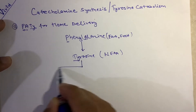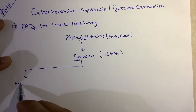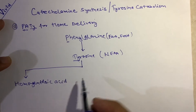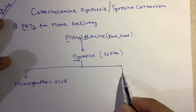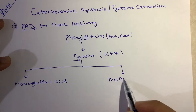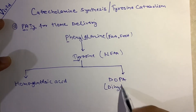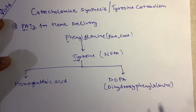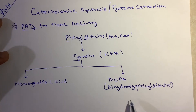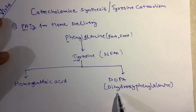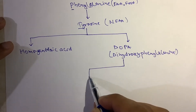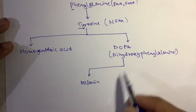You can see PA (phenylalanine) and TY (tyrosine). 'Home delivery' stands for homogentisic acid — tyrosine gets converted into homogentisic acid. 'Delivery' also stands for DOPA, which is dihydroxyphenylalanine. Melanin is not formed up to this stage; the next step is where melanin synthesis occurs, as DOPA is converted into melanin.